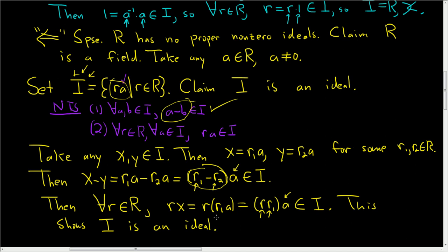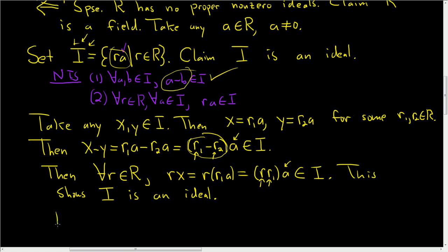So we've shown that I is an ideal. So because I is an ideal, or rather before that, note something. Note A can be written as 1 times A. So A is certainly in I. And so then we can do the following: 1 can be written as 1 times A. We know that 1 is in R, we know that A is in I.